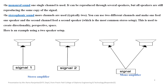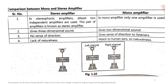This is the difference between mono and stereo amplifier. In a stereo amplifier, at least two independent amplifiers are used, and this pair of amplifiers is known as a stereo amplifier. In a mono amplifier, only one amplifier is used. Stereo amplifier gives three-dimensional sound; mono amplifier gives two-dimensional sound. In mono there is no sense of direction, while stereo gives naturalness, whereas there is a lack of naturalness in mono.